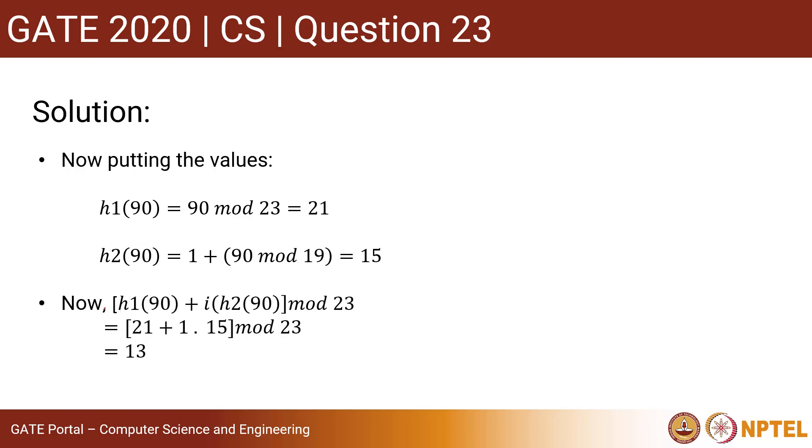Now let's calculate this final expression: [h1(90) + i·h2(90)] mod 23. Now we already know that i = 1 because we are calculating for probe 1. So h1(90) is calculated as 21.